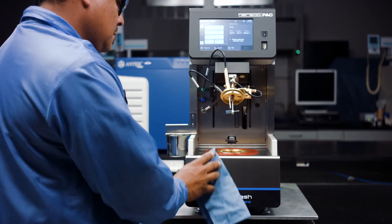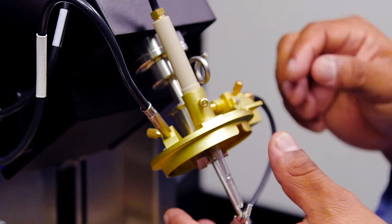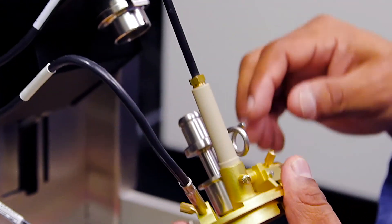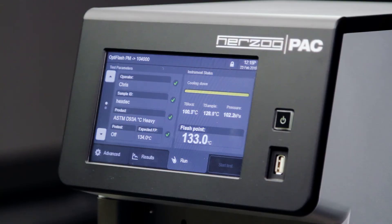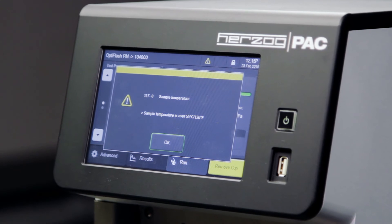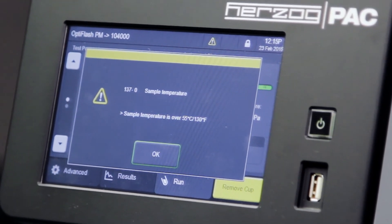OptiFlash is also much easier to clean due to an innovative design, which allows for the disassembling of the cup cover with one simple button push and a removal of the shutter without any tools. A special procedure for high viscous samples keeps them at a standby temperature at the end of the test, which makes it easy to clean even the most difficult sample types, such as bitumen.